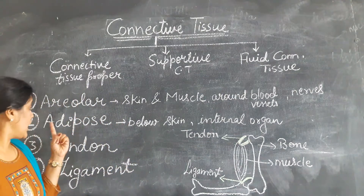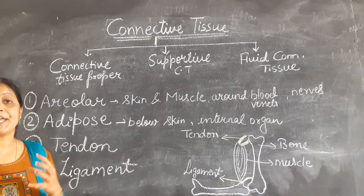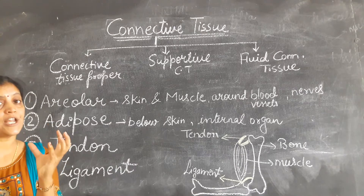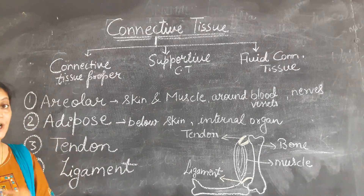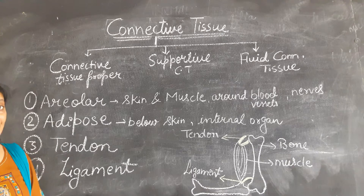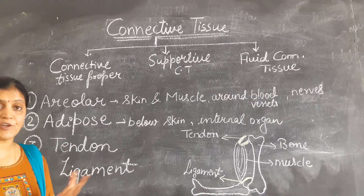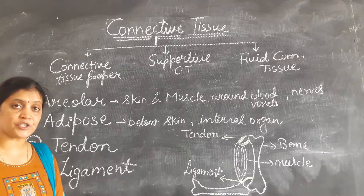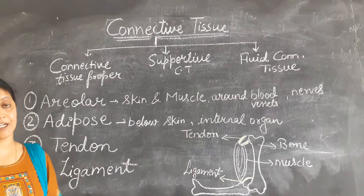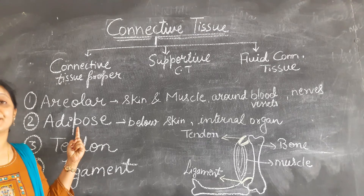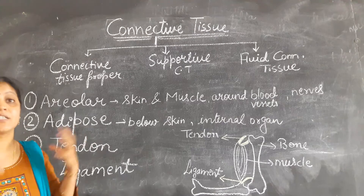The main function of adipose tissue is the storage of fat — it is a fat storage tissue. This is a very important question in exams: fat storage tissue is adipose. Since fat is a good insulator, adipose tissue also works as an insulator which protects us from outer cold.